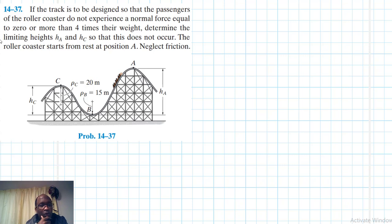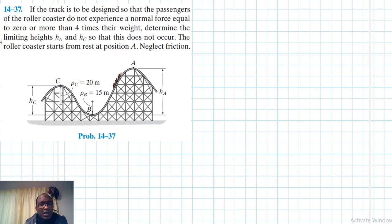Welcome. The problem reads: if the track is to be designed so that the passengers of the roller coaster do not experience a normal force equal to zero or more than four times their weight, determine the limiting heights h_a and h_c so that this does not occur. The roller coaster starts from rest at position A. Neglect friction.